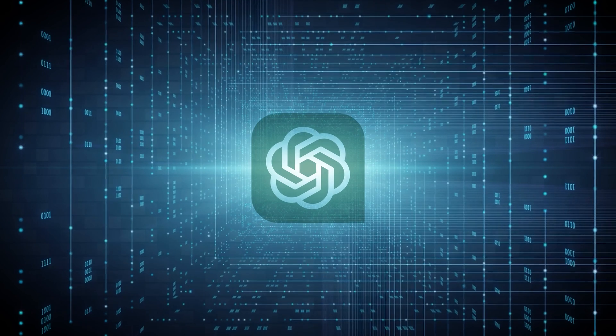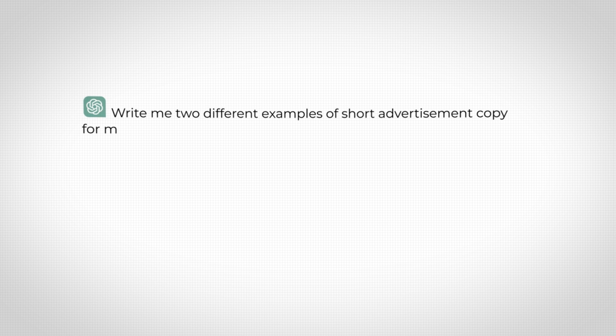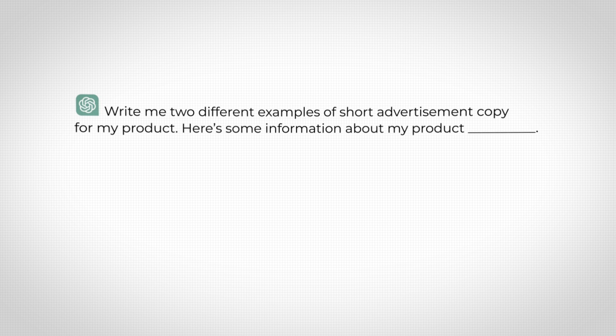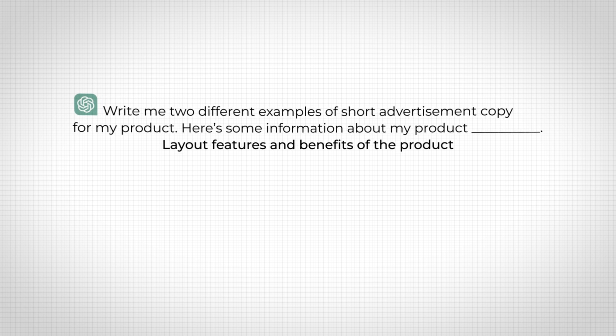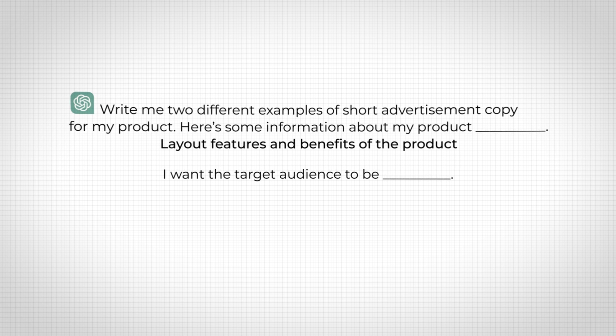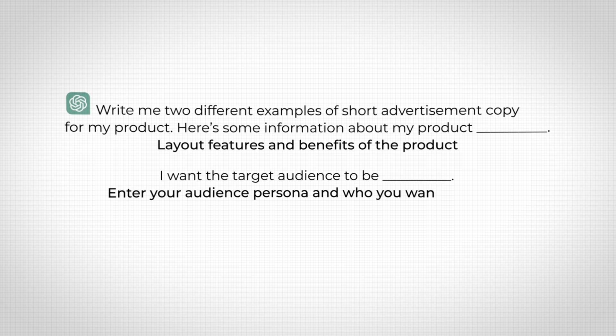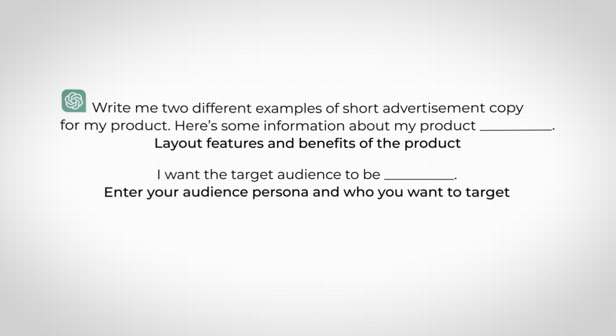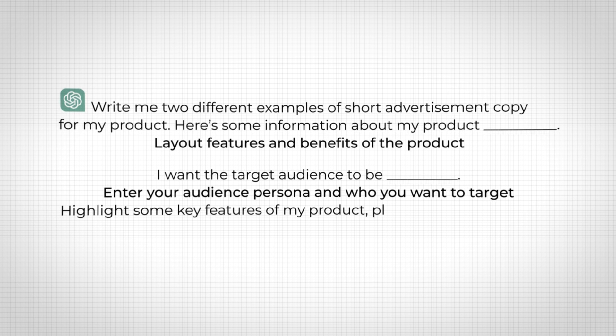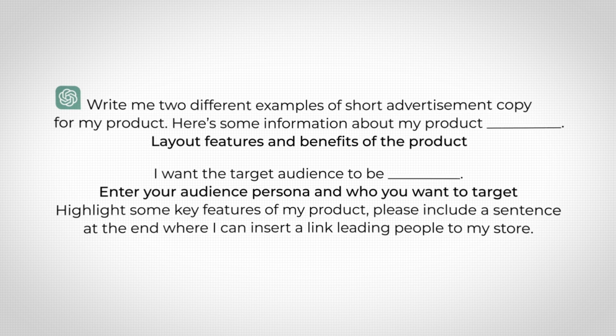Now for the ad copy, you don't need to be a professional copywriter. This is where AI can help you work smarter, not harder. Here's a quick ChatGPT prompt that will save you time: 'Write me two different examples of short advertisement copy for my product. Here's some information about my product' — lay out features and benefits. 'I want the target audience to be blank' — enter your audience persona. 'Highlight some key features of my product. Please include a sentence at the end where I can insert a link leading people to my store.' When you get the response, edit it to match your brand's voice. Please do not just copy and paste it — you want it to sound like a person actually wrote it.